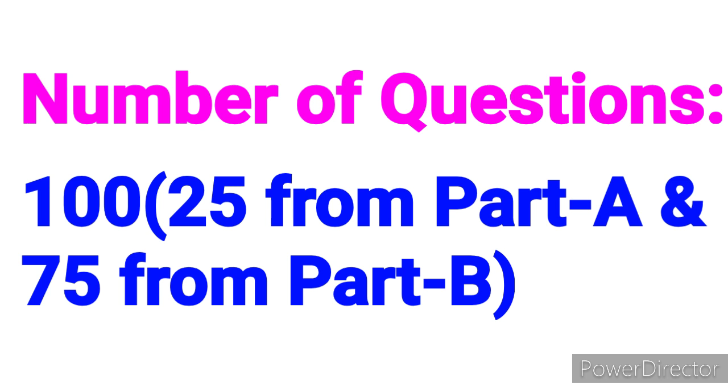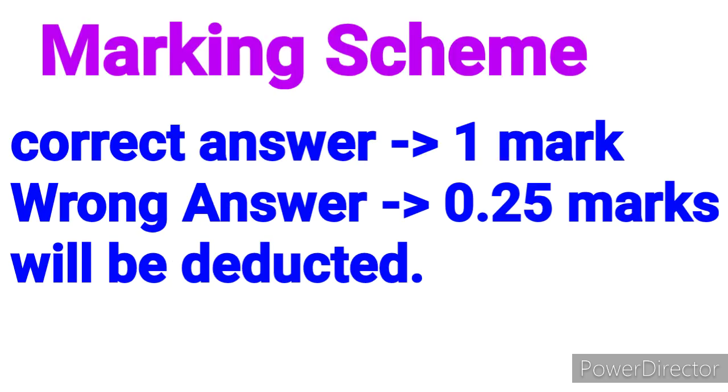In the marking scheme, for each correct answer you get 1 mark. If you do a wrong answer, there is negative marking of 0.25 marks deducted. So there is a negative mark.